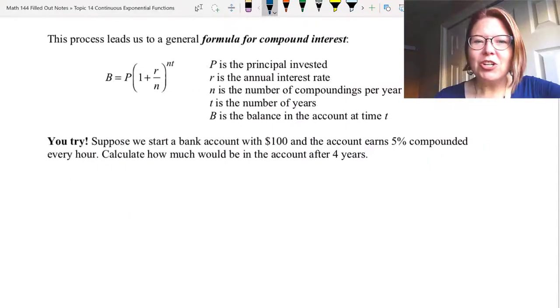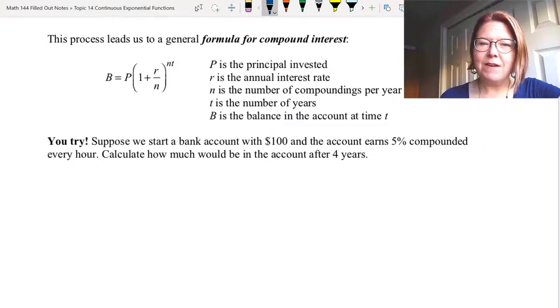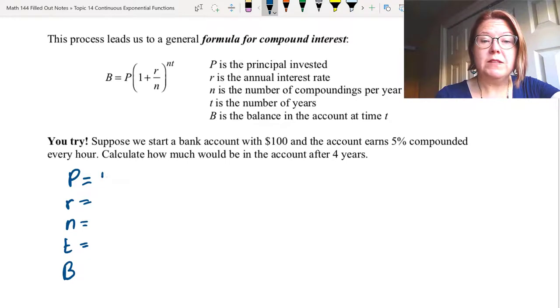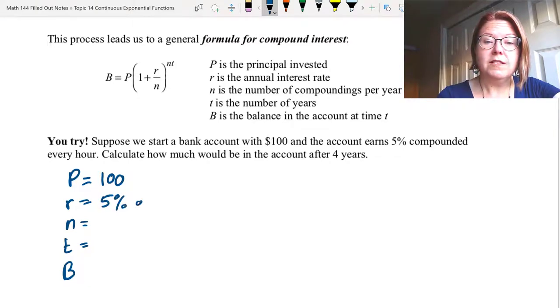Okay, we're back. I'm going to start this problem by just listing out the five variables that might be in the equation and what we know and don't know. So the variables are capital P, lowercase r, lowercase n, lowercase t, and capital B. Capital P is the principal, what we start with, and that's $100. Lowercase r is the interest rate annually, which is 5% or 0.05 as a decimal.